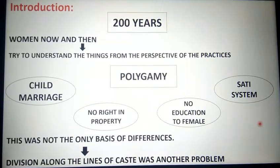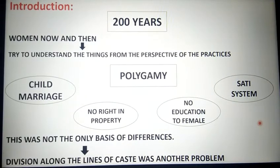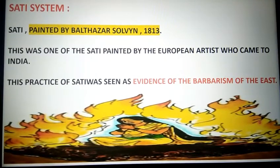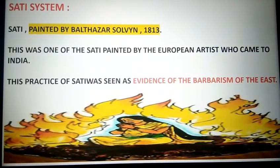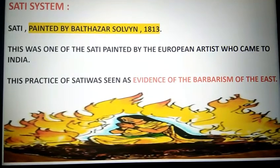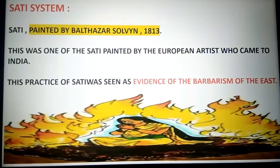Not only this, we'll also look at how people were discriminated on the basis of caste. First, we'll talk about sati — a practice that shows us about the barbarism of the era — the rude and offensive acts towards women that we've seen in history. One such practice is the sati system.